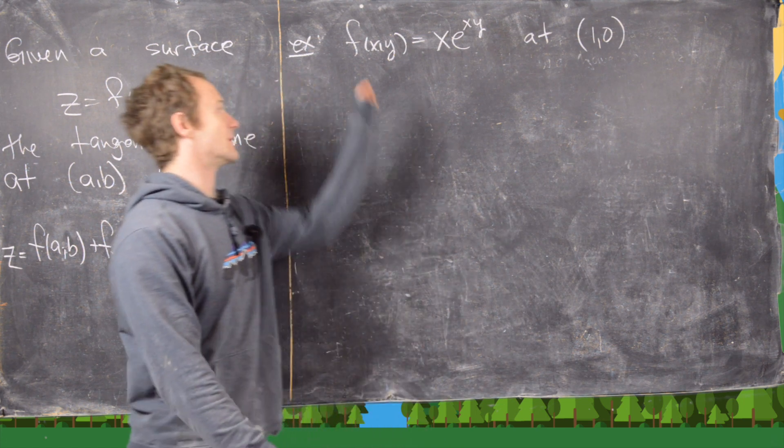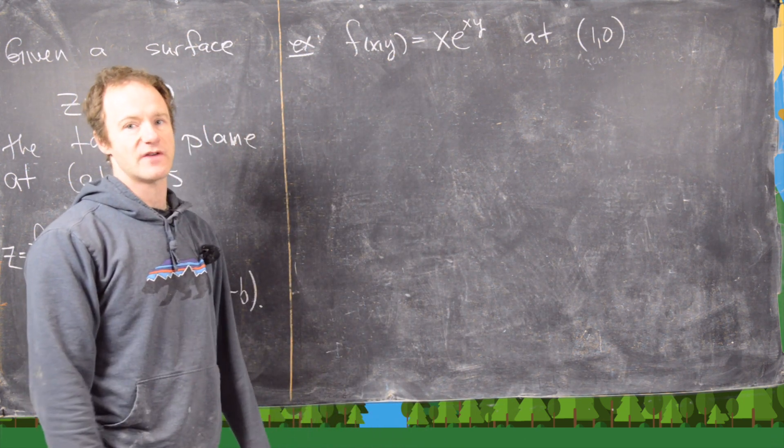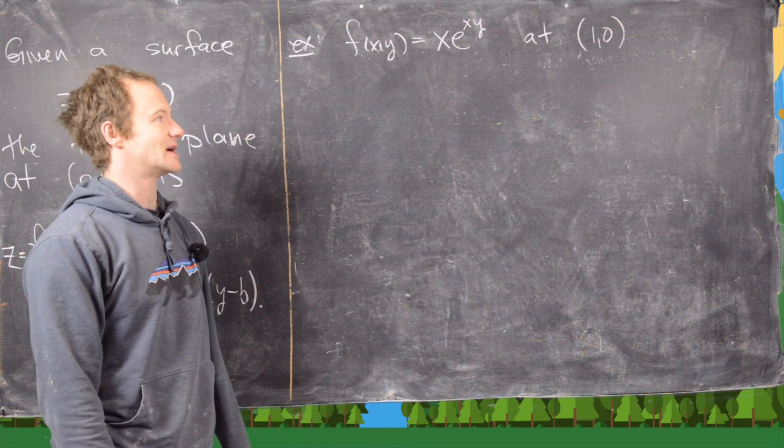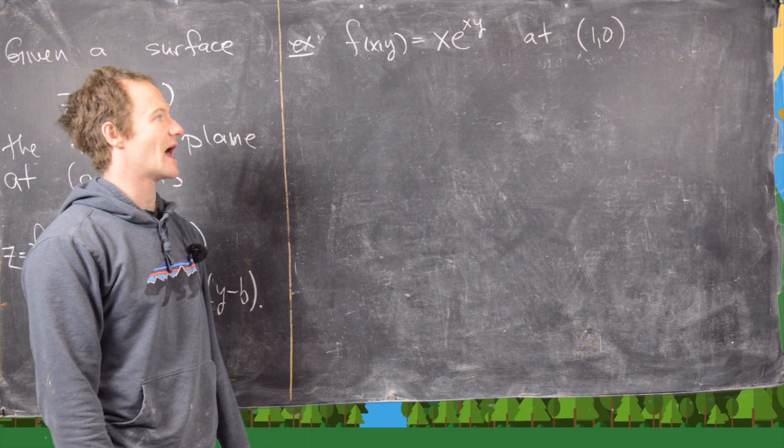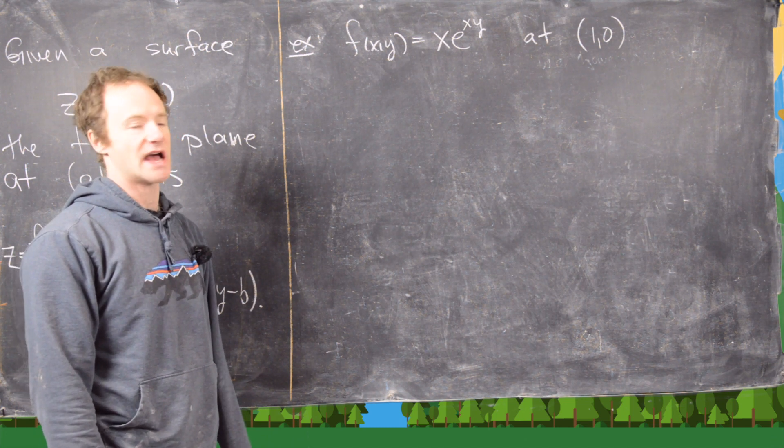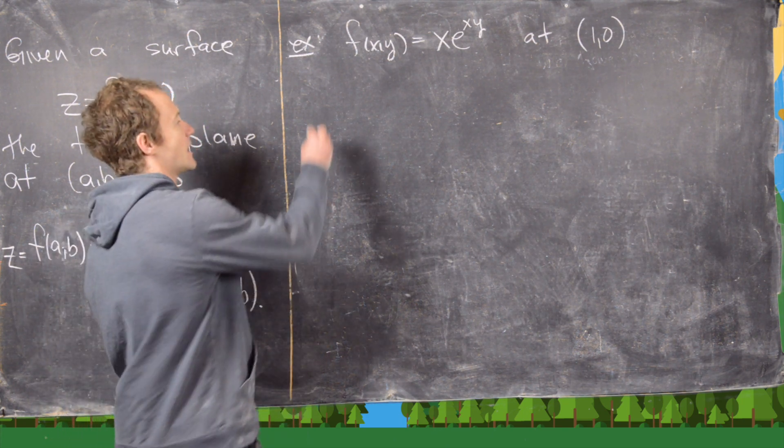In this video we're going to do a couple of examples. Let's look at this one: f of xy equals x times e to the xy, and we want to look at (1,0). In other words, x equals 1, y equals 0.